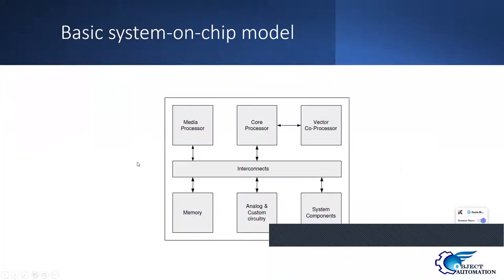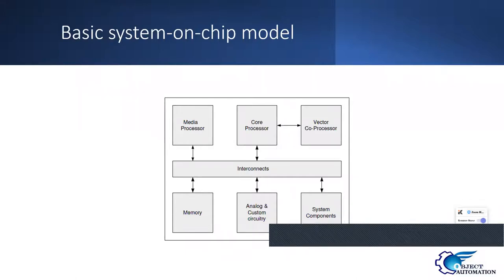What are the basic components of an SoC? It has a media processor generally for encoding or decoding video and providing graphics. The SoC inside my laptop has a GPU to show graphics. It has memory for the processor to access addresses and store data. Then there are system and I/O components — thousands of things — analog and signal capability, and vector coprocessors for vector instructions.